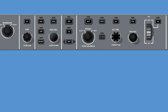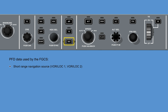The PFD data used by the FGCS and transferred by pressing the SRC button includes: short range navigation source — VOR/localizer 1, VOR/localizer 2; baro-corrected altitude; and FMS source — FMS 1 or FMS 2.